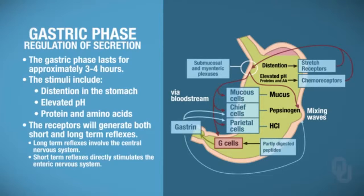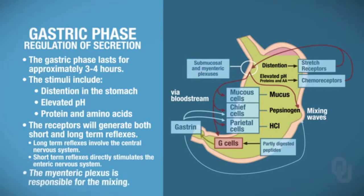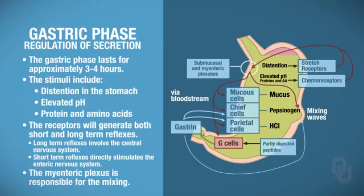Action potentials are sent to the enteric nervous system — specifically to the submucosal plexus, which is located in the submucosal gut wall, and to the myenteric plexus, which is the nerve network that is part of the muscularis externa. The myenteric plexus is responsible for the mixing and contraction of smooth muscle to mix the chyme in the stomach. The stomach contents are referred to as chyme at this stage.